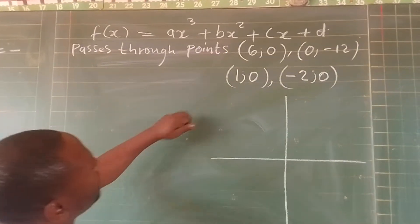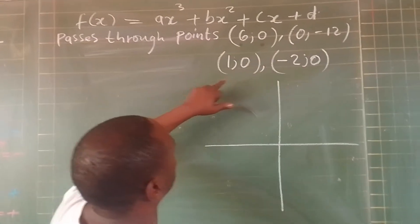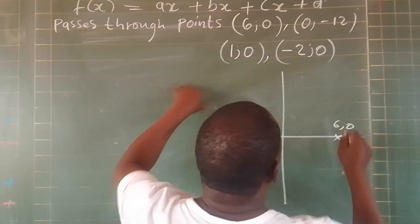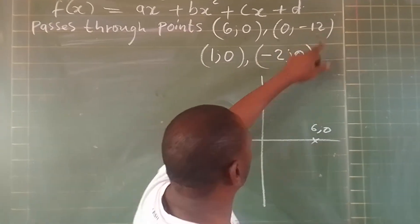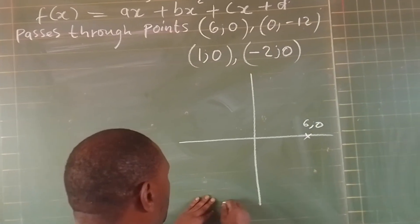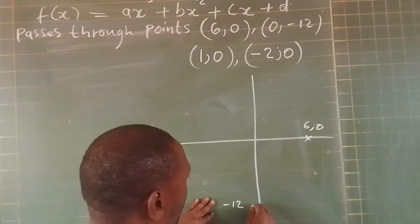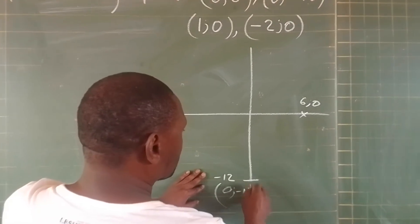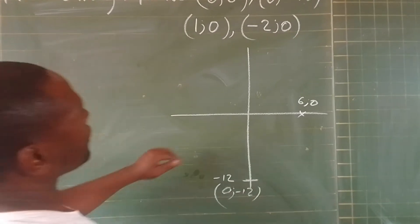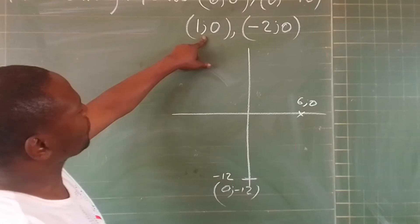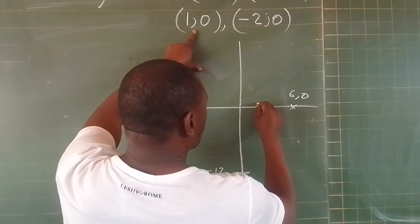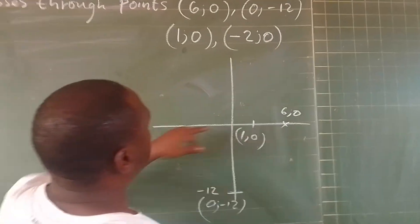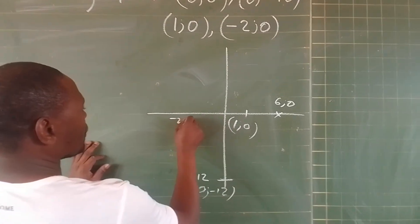Here you have (6, 0), it's about here. And then (0, -12), (1, 0), and (-2, 0).